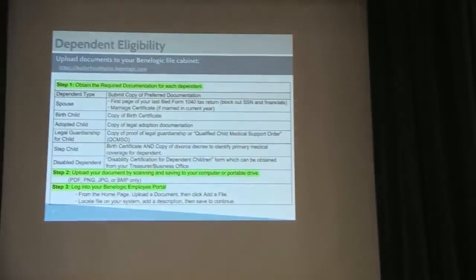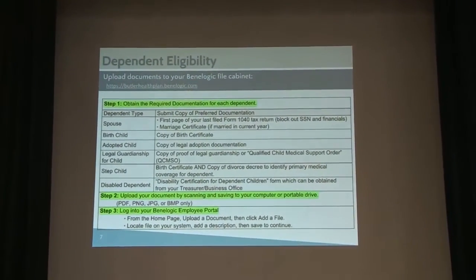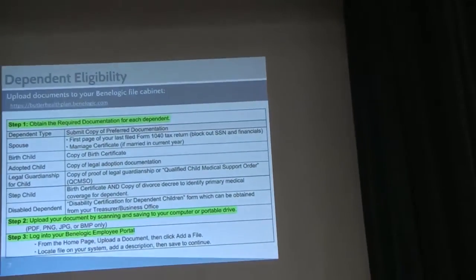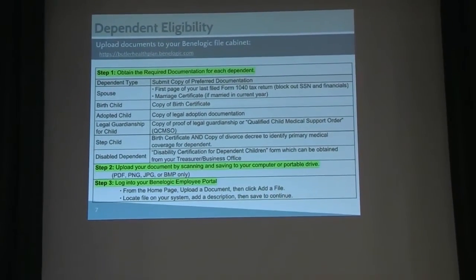Did everybody get the email that had the brochure attached to it from the health insurance plan? That went out about October 20th, it came from Jill. There is a lot of information within the body of the email, and an attachment that outlines much of the critical information being covered today. It's also outlined well within the email — the documentation you will need to upload into the Benalogic system for the dependent eligibility audit.